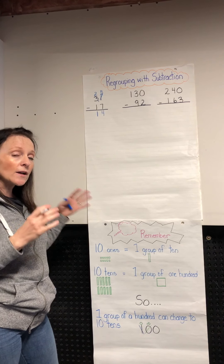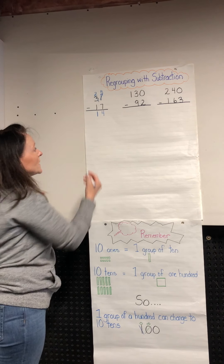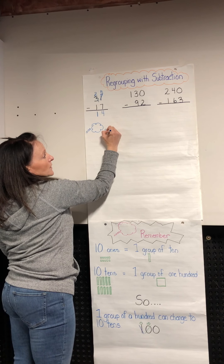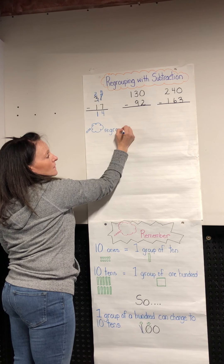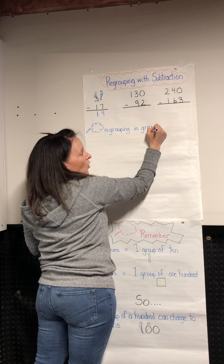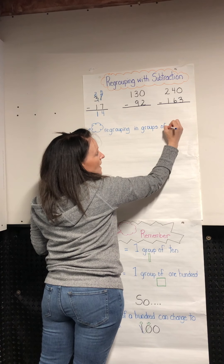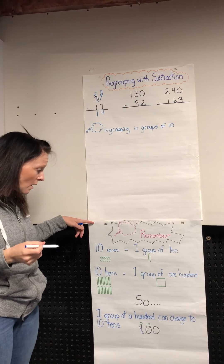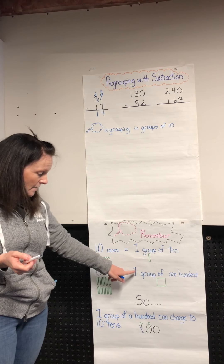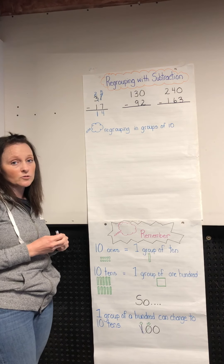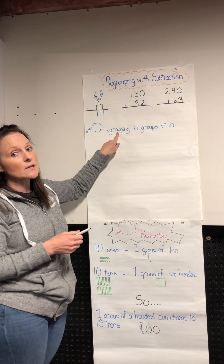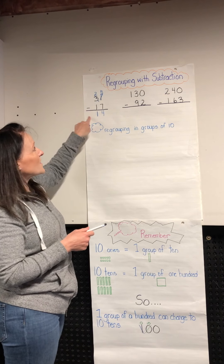We have to remember that group of ten — we're always thinking about regrouping in groups of ten, always moving them in groups of ten. Our tool reminds us: ten ones is the same as one group of ten, and ten tens is the same as one group of a hundred. We want to keep our thinking of regrouping in groups of ten. That was one regrouping.